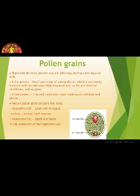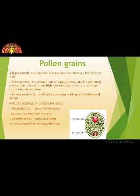Now we will see the structure of the pollen grain. If we dust a flower on our hand or on paper, we see some dust-like structure — those are pollen grains. When we observe them under the microscope, we can see their structure. The pollen grains represent the male gametophyte. They are spherical and have a two-layered wall. The outer wall is called the exine and the inner wall is called the intine.